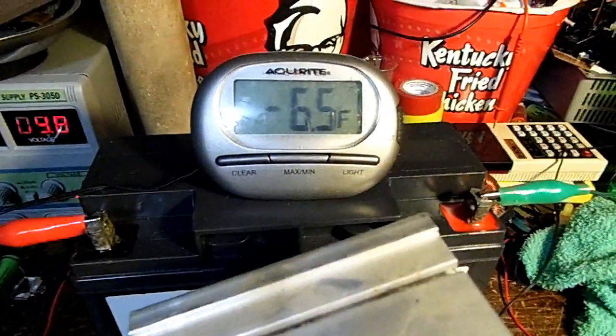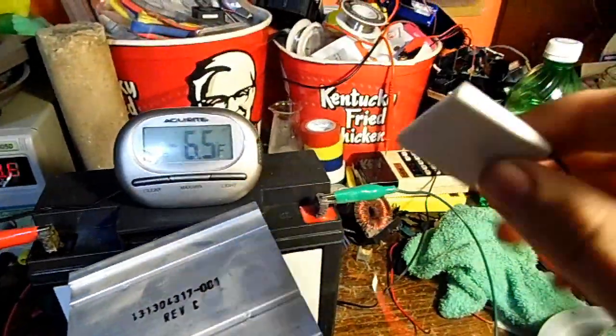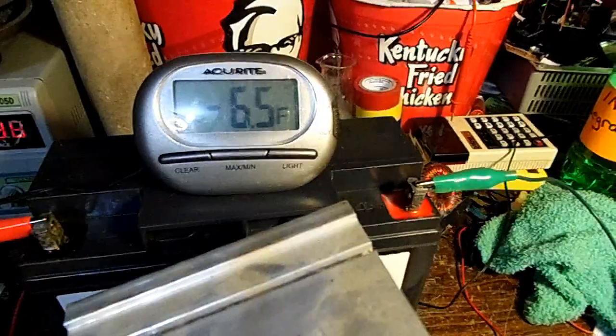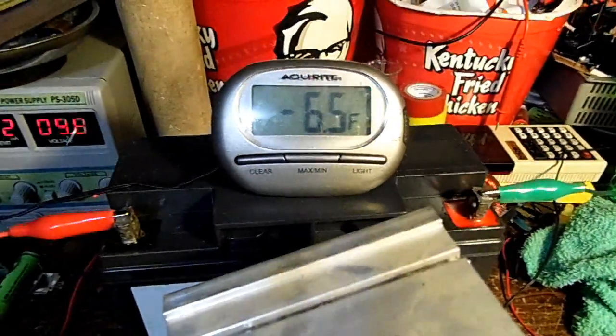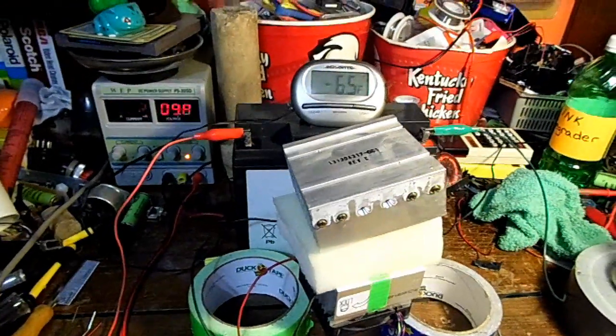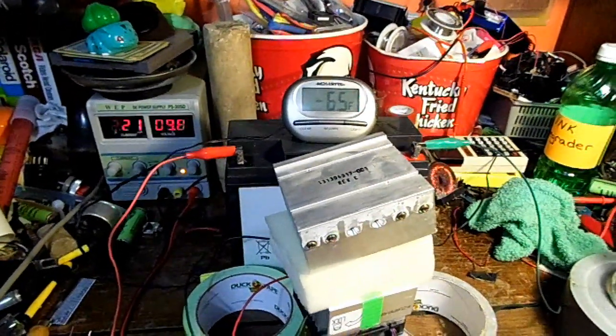So, there you have it. Minus 6.5. That's the best I've ever gotten out of one Peltier cooler. That's, I'd say, maybe 75 degrees or so. 75 degrees difference. Well, I hope you enjoyed this video, and I hope you learned something, too. Thanks for watching. See ya.